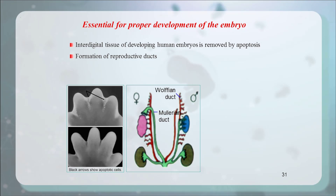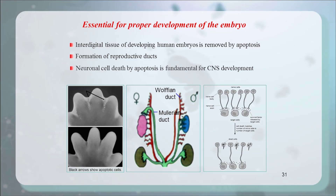Neuronal cell death by apoptosis is also fundamental for central nervous system development, especially the formation of one-to-one synapses. Originally, several neurons form synapses with the target neuron, but this kind of many-to-one synapse is not good for information transfer. Subsequently, redundant neurons are deleted by apoptosis, which is absolutely necessary for accurate one-to-one information transfer. So apoptosis is essential for normal embryonic development.